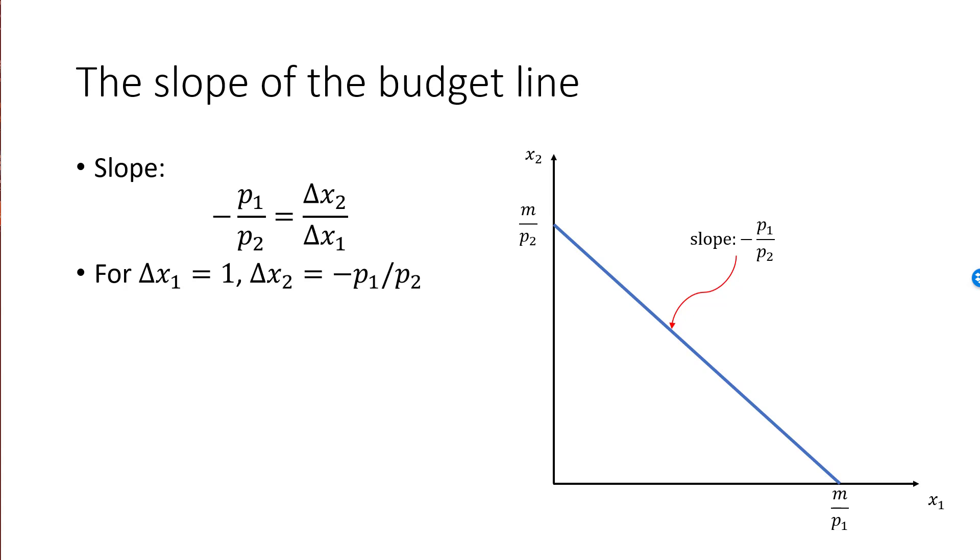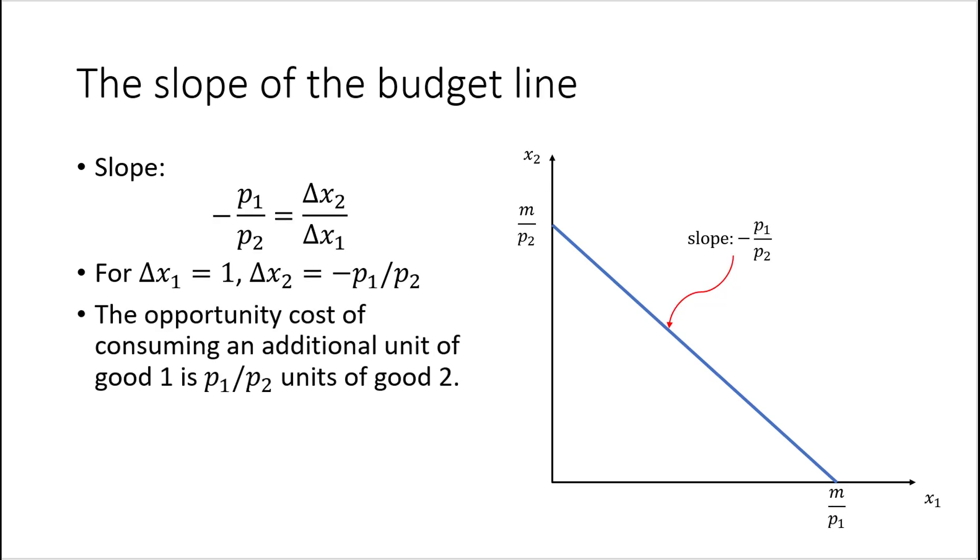For example, if p1 is 2 and p2 is 3, I need to decrease my consumption of good 2 by 2 over 3 if I want to increase my consumption of good 1 by 1 unit and stay on the budget line. This makes perfect sense. Increasing x1 by 1 unit will cost me 2. Decreasing x2 by 2 over 3 will save me 2, since each unit of good 2 costs 3, and 2 over 3 times 3 is 2. Total expenditure remains unchanged. This means that we can think of p1 over p2, the absolute value of the slope, as the opportunity cost of good 1. One more unit of good 1 will cost us p1 over p2 units of good 2.